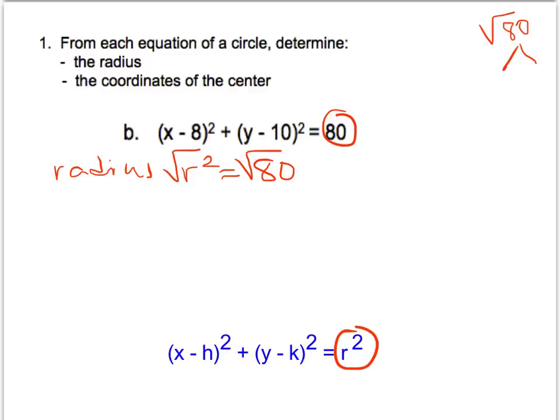The biggest perfect square that goes into 80 is 16. And so to simplify root 80, that will be 4 root 5 as the radius of our circle.